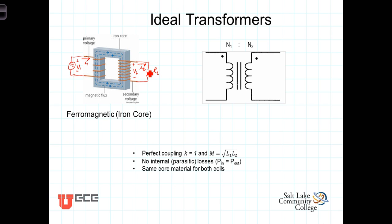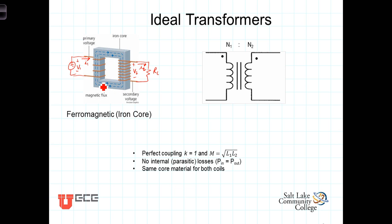This is all true for transformers in general, but the ideal transformer makes three assumptions. The first assumption is that any magnetic field created by the primary winding will be completely coupled into the secondary winding. One way to accomplish that is to wind the secondary right on top of the primary. Another common way is using an iron core where the primary winding is on one side and the secondary winding is on the other side. The iron core, being a good conductor of magnetic flux, means that to a good approximation, all of the flux from the primary is coupled through the magnetic core to the secondary.